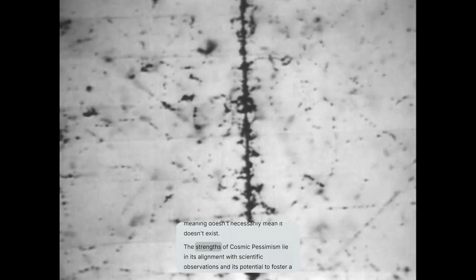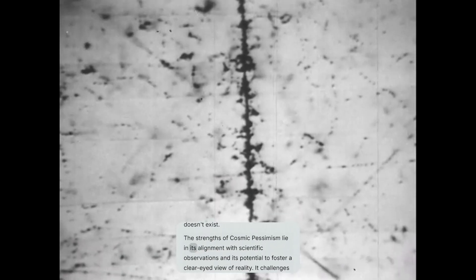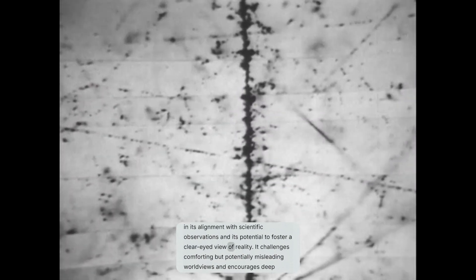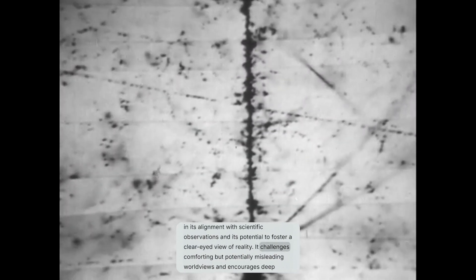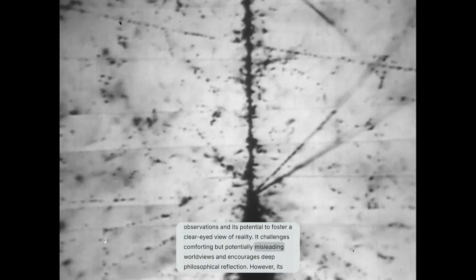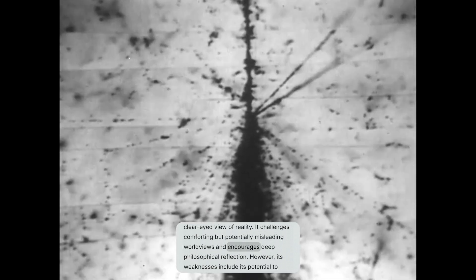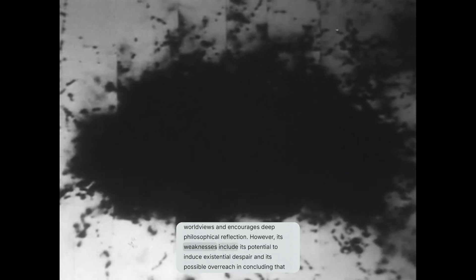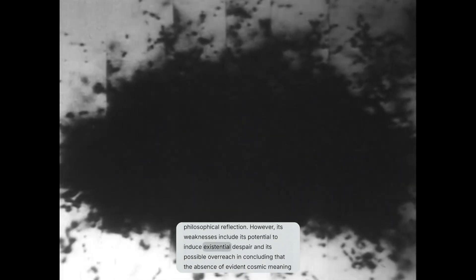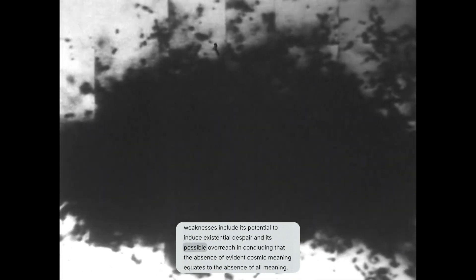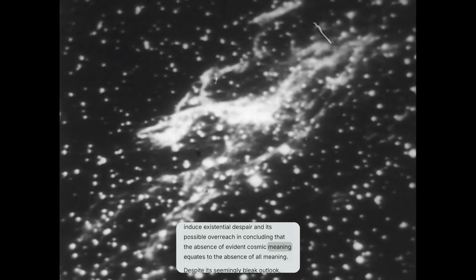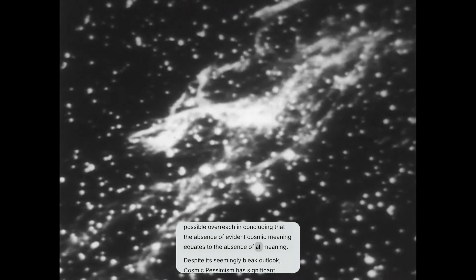The strengths of cosmic pessimism lie in its alignment with scientific observations and its potential to foster a clear-eyed view of reality. It challenges comforting but potentially misleading worldviews and encourages deep philosophical reflection. However, its weaknesses include its potential to induce existential despair and its possible overreach in concluding that the absence of evident cosmic meaning equates to the absence of all meaning.